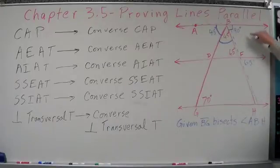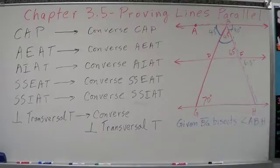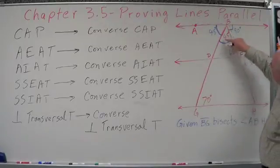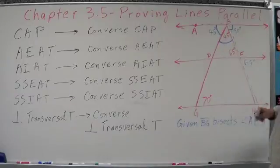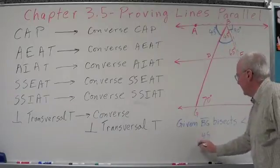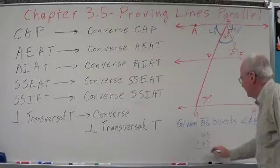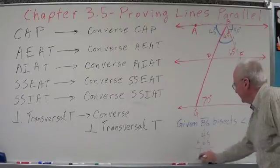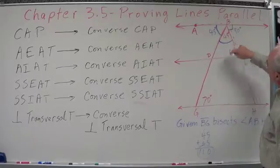Therefore, are these two lines parallel? No, they can't be. Why? Because their corresponding angles are not congruent. Now, this is 45 and this is 65. 45 plus 65 equals — zero carry the one — that's 110. So these two equal 110.